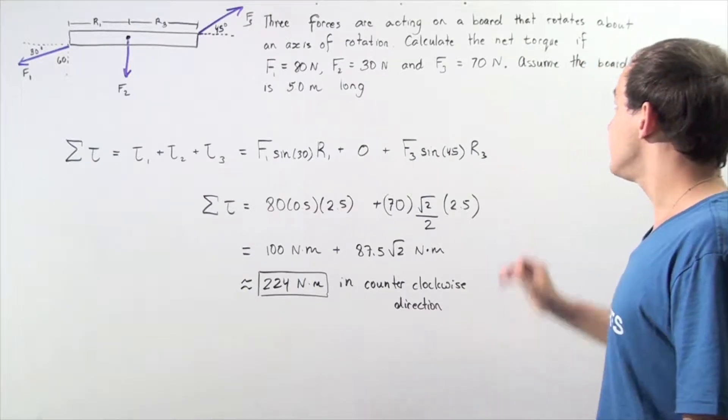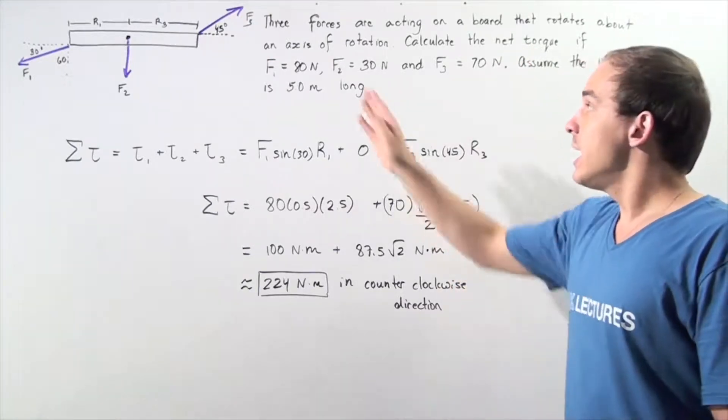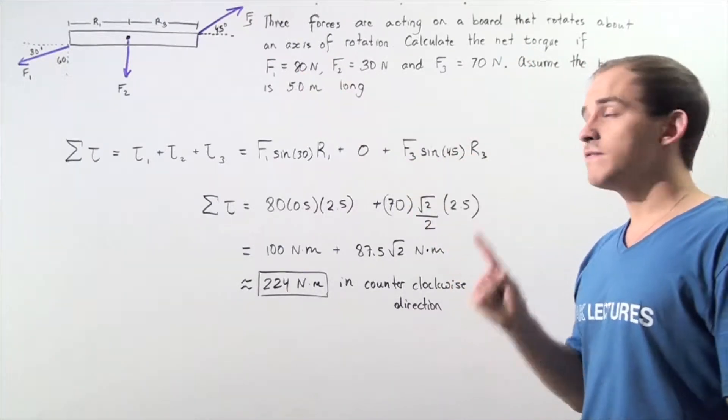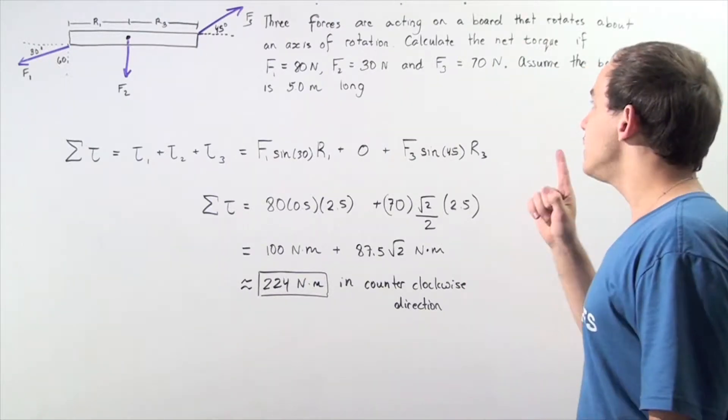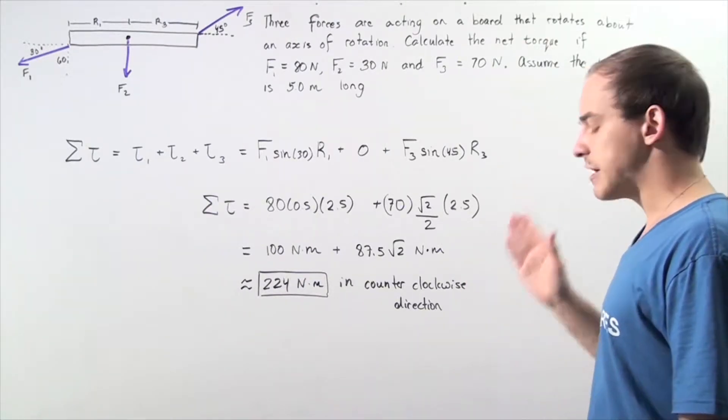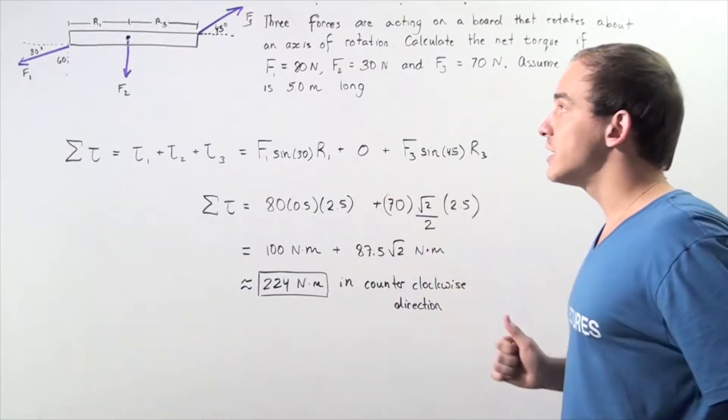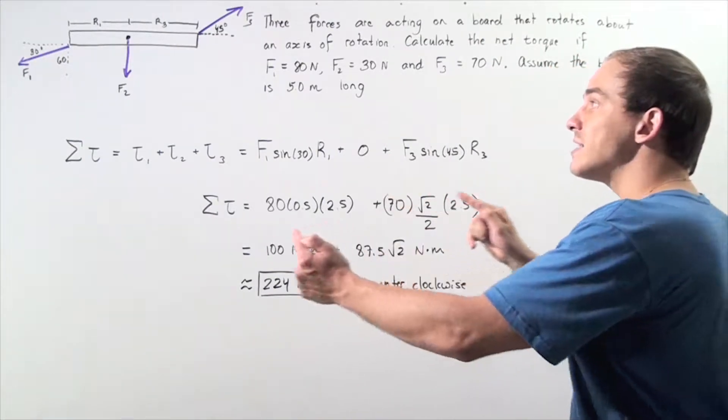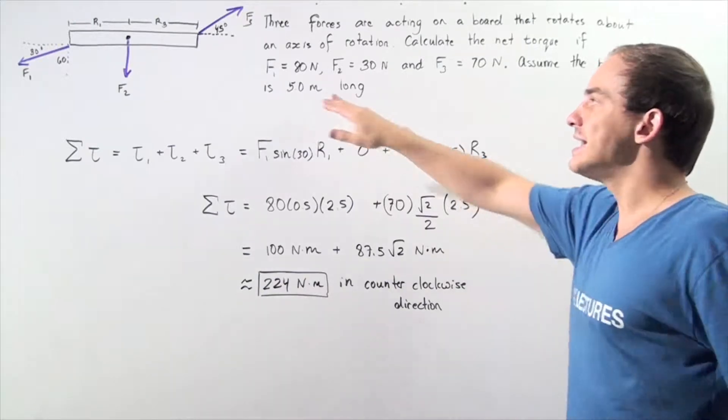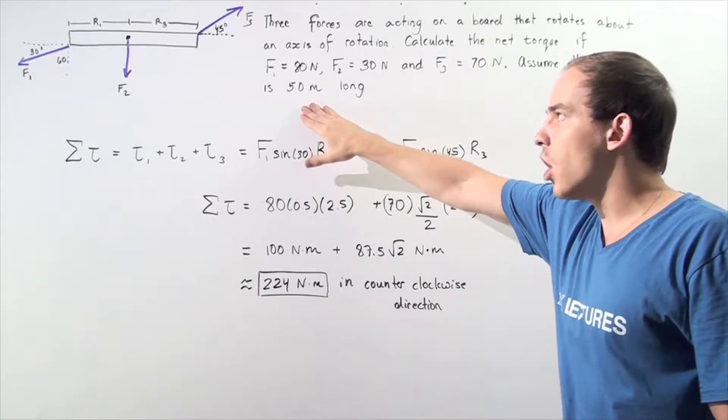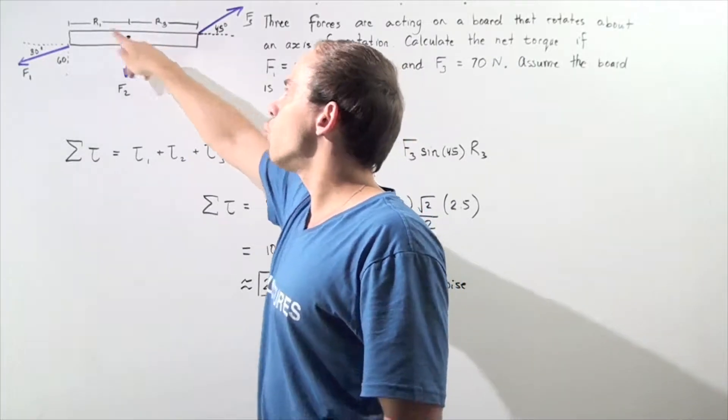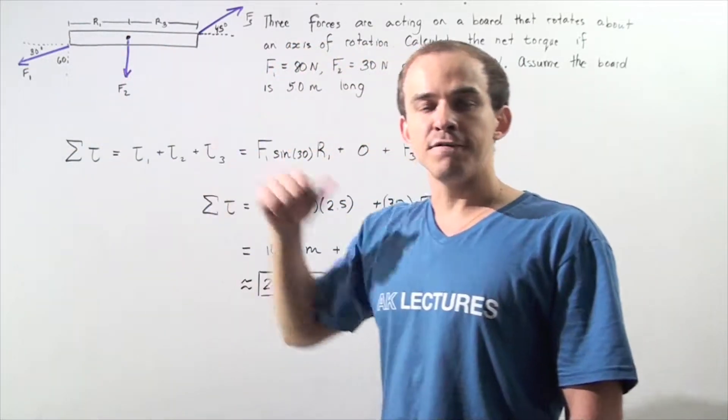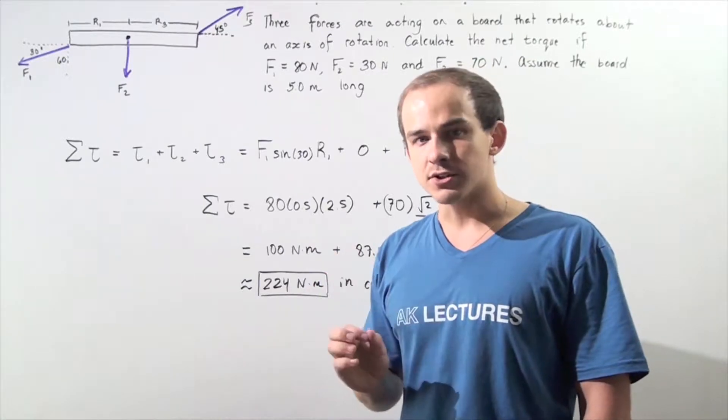We want to calculate the net torque knowing force 1 has a magnitude of 80 newtons, force 2 has a magnitude of 30 newtons, and force 3 has a magnitude of 70 newtons. Let's make the assumption that the entire length of the board is 5 meters long. So that means from the axis of rotation to one edge is half of 5 meters, so 2.5 meters.